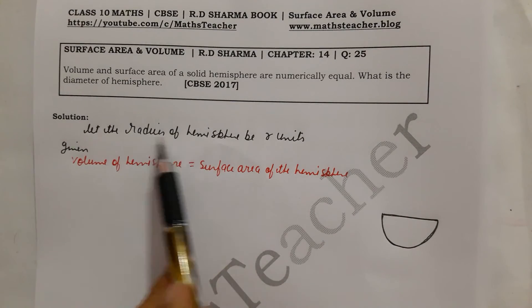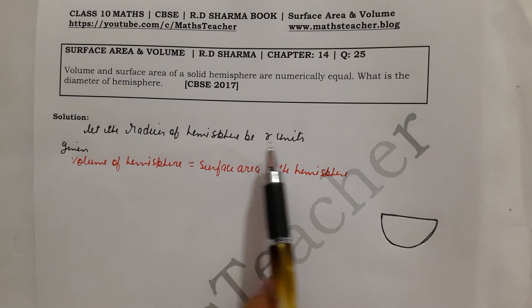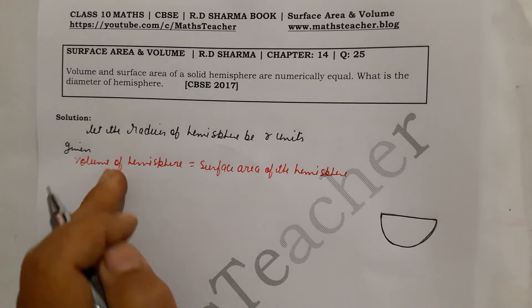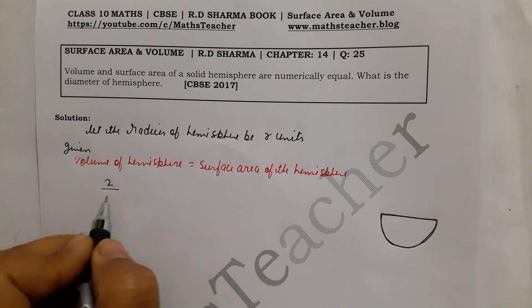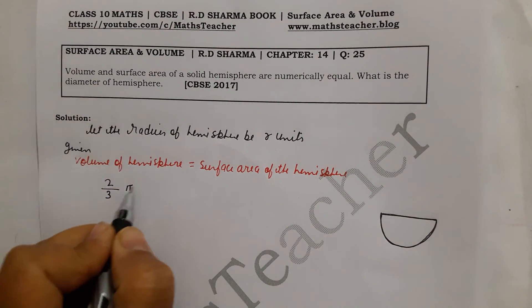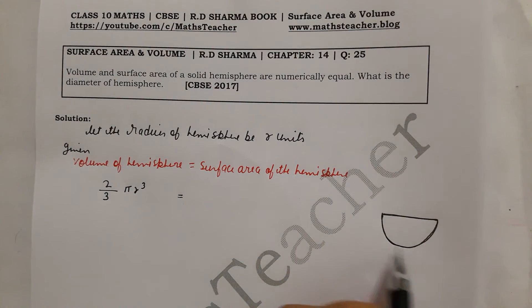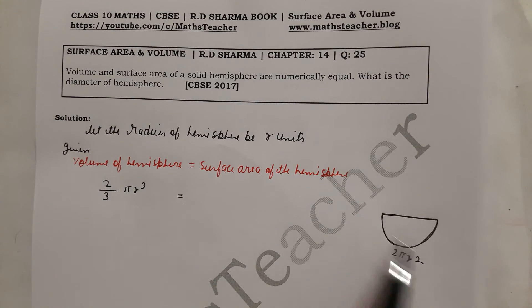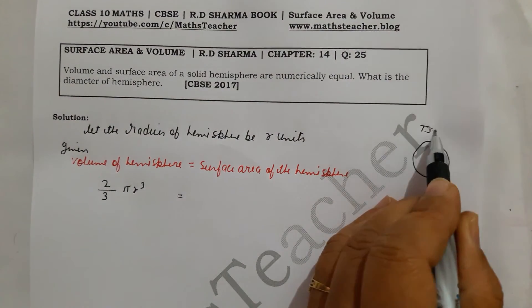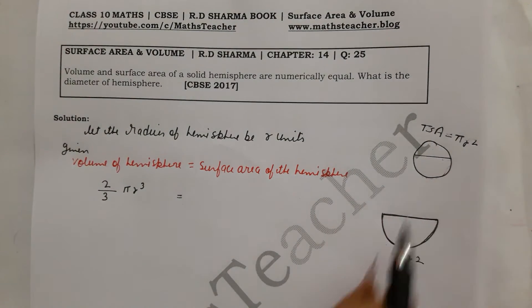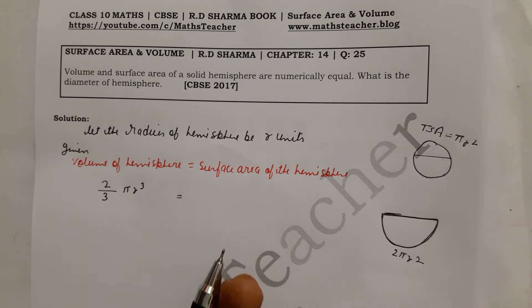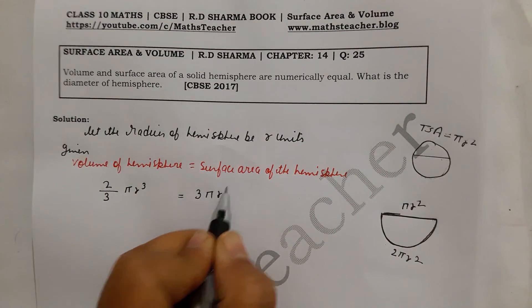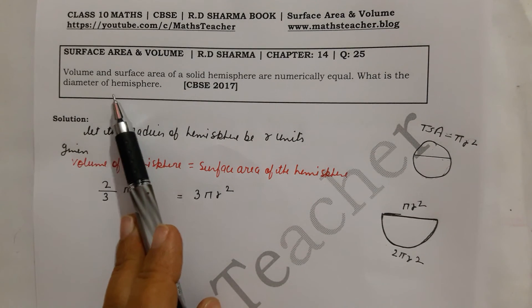Let the radius of the hemisphere be r (in units, since no unit is specified). The volume of a solid hemisphere is (2/3)πr³ and the total surface area of a solid hemisphere is 2πr² (curved surface) plus πr² (flat circular base), which gives 3πr². Since volume equals surface area numerically: (2/3)πr³ = 3πr².